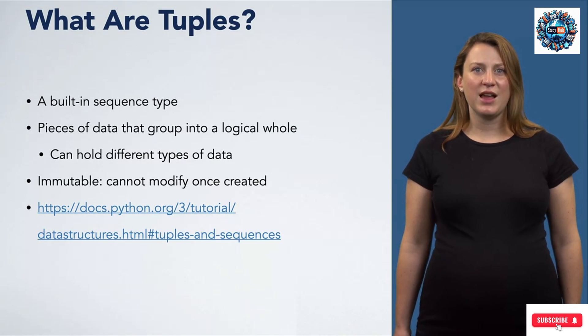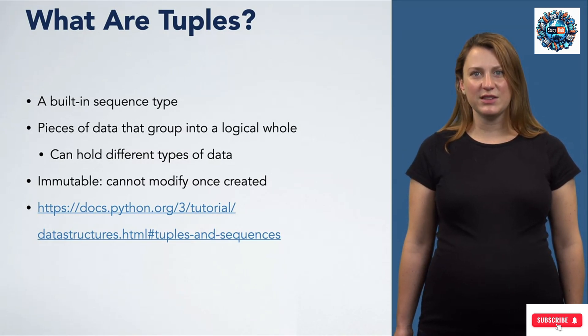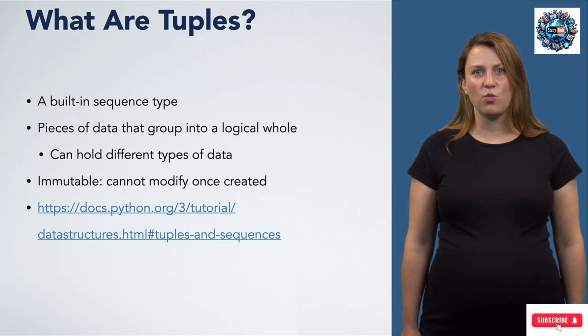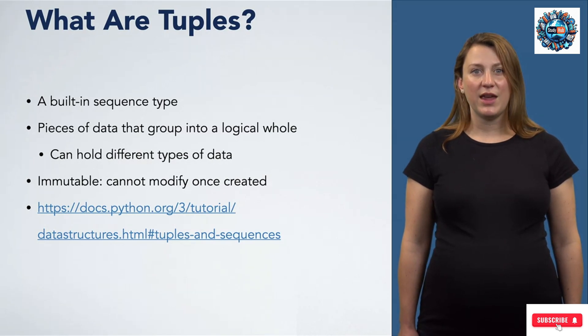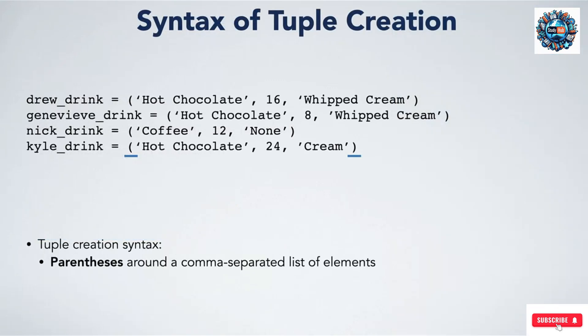Within one tuple, the elements may have different types of data. In our previous example, the name of the drink and addition to the drink were strings, while the size of the drink was an integer. Tuples are immutable, which means we cannot modify them once they've been created. We can't add on to them, we can't remove from them, and we can't update the individual elements. Here's a link to the documentation if you need to read more about tuples.